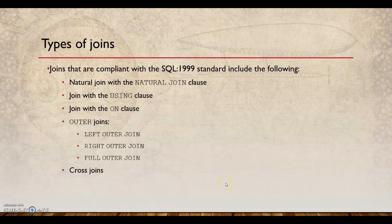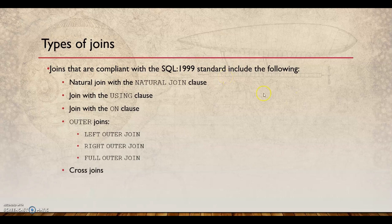There are different joins. The first is the natural join between two tables, which is the most common one. This is as per the SQL-1999 standard, which is the ISO standard. Then there are joins with the USING clause and ON clause, and others like left outer join, right outer join, full outer join, and cross join which gives you the Cartesian product.